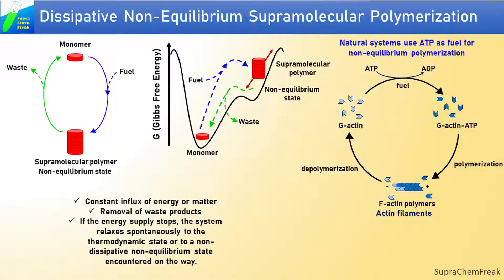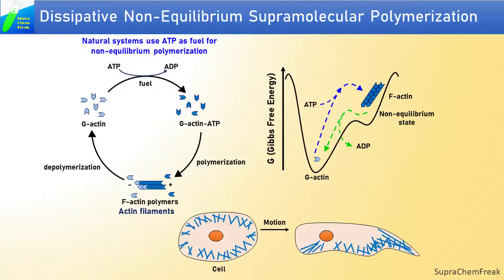Nature extensively exploits non-equilibrium transient self-assembly to perform work through a dissipative process. The self-assembly relies on the use of molecules as fuel that is consumed to drive thermodynamically unfavorable reactions away from equilibrium. This provides spatiotemporal control over functions such as cell motion and division. One such example is actin filaments that consume ATP to drive self-assembly out of equilibrium for cell motility.